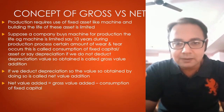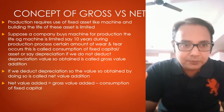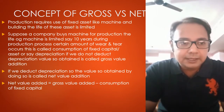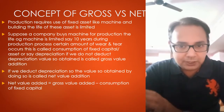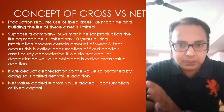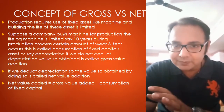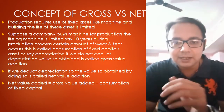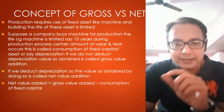Suppose a company buys a machine for production — the machine has a limited life, say 10 years. During the production process, the machine or building has wear and tear, and whatever value it loses during the production cycle is called depreciation of fixed assets or fixed capital. We assign a monetary value to this loss. If we deduct depreciation, we get the net value.